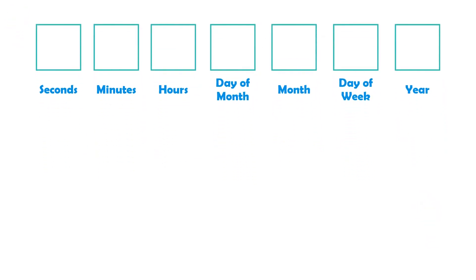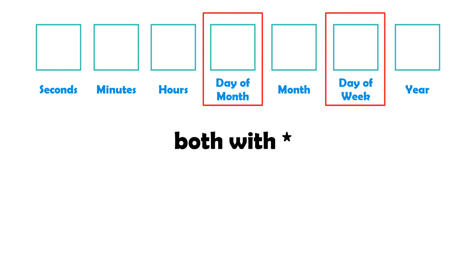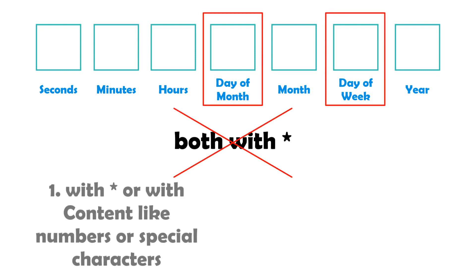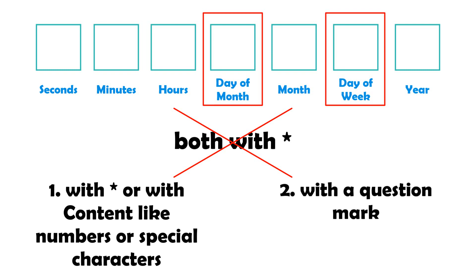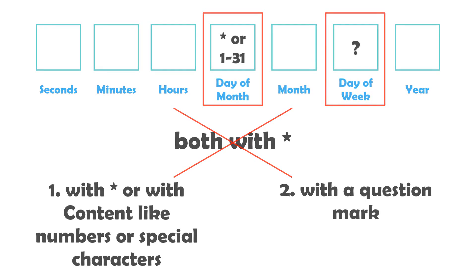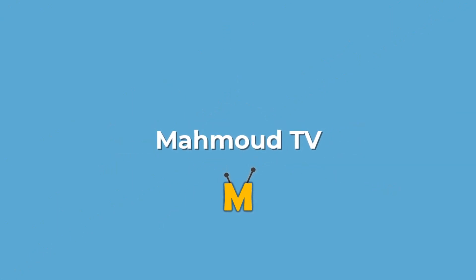As we can see in all examples, the fields day of week and day of month can never both be filled in with a star. One should always be filled in with a star or with content and the other with a question mark. Now we are at the end of the video. I hope you enjoyed the video and you can take something out of it. See you in the next video.